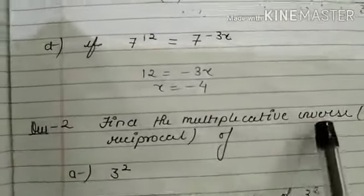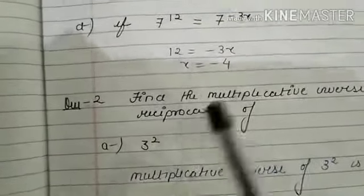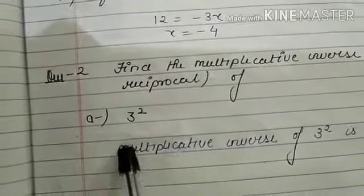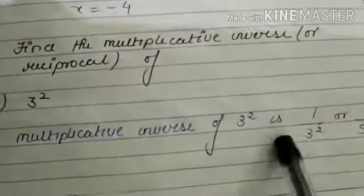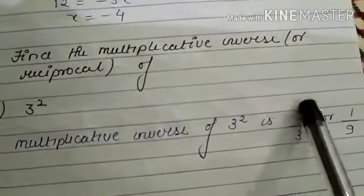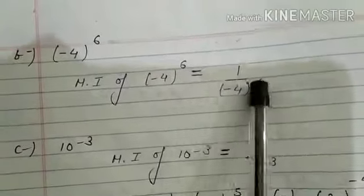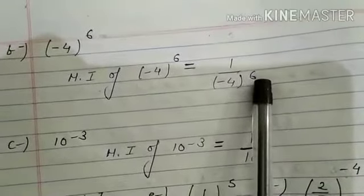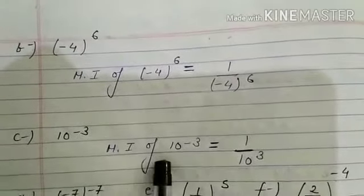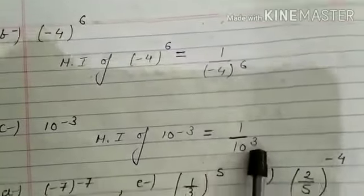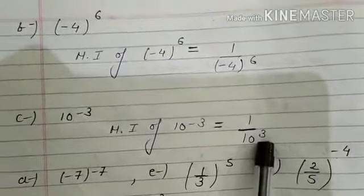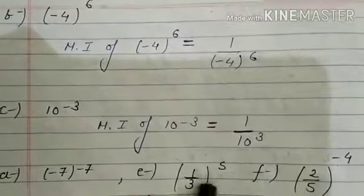Question 2: Find the multiplicative inverse — another name for this is reciprocal — of the following. Part a: multiplicative inverse of 3 to the power 2 is 1 upon 3 to the power 2, which means 1 upon 9. Part b: multiplicative inverse of minus 4 to the power 6 equals 1 upon minus 4 to the power 6. Part c: multiplicative inverse of 10 to the power minus 3 equals 1 upon 10 to the power plus 3.